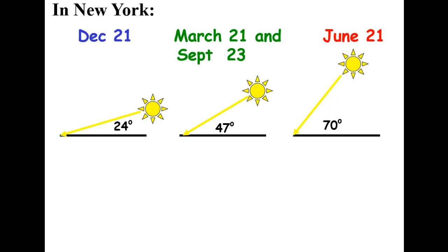But you'll note that from these three diagrams, our sun will never come directly overhead in New York — it never hits us at a 90-degree angle. It may feel like it sometimes when we go outside and the sun appears to be over our head, but the angle of insolation from outer space hitting our Earth will never reach 90 degrees in New York.